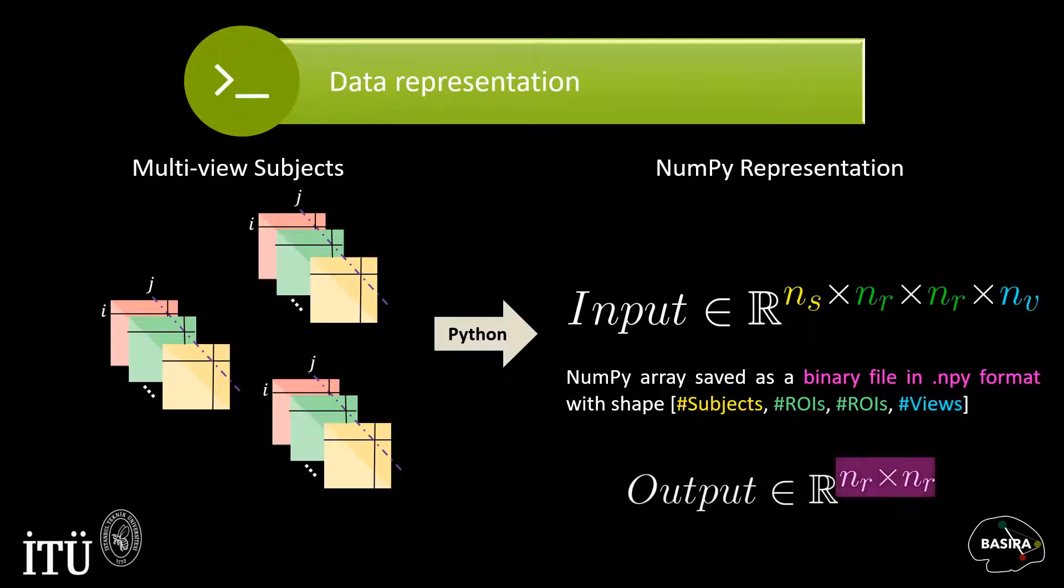After the training, our DGN will output N_R by N_R matrix, which is the integrated connectional template for the population.